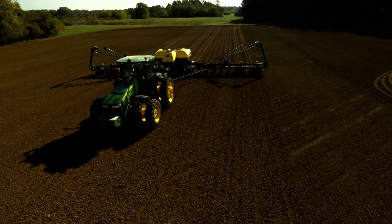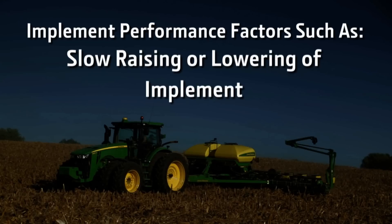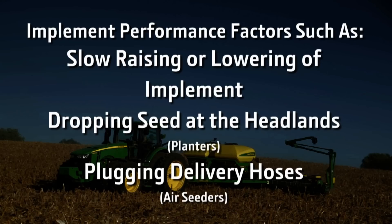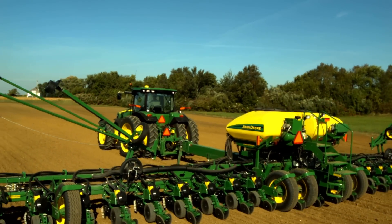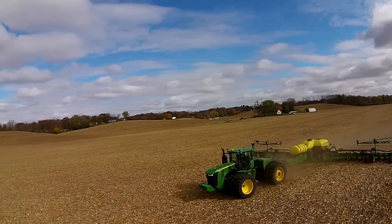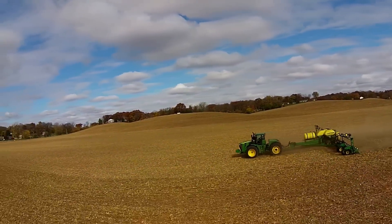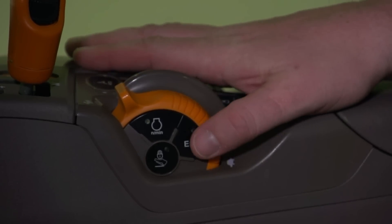When making the headland turn, watch the implement performance during the turn. Monitor the implement for slow raising and lowering, dropping seed at the headlands, or plugging delivery hoses. We can reduce the eco off engine speed until you see these conditions occur, then increase the engine speed to eliminate those conditions and improve fluid efficiency.